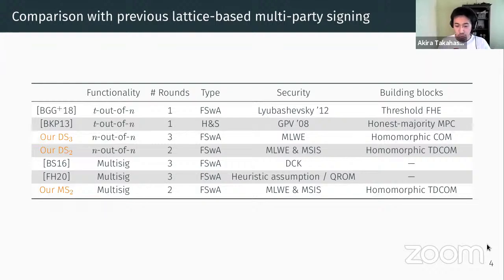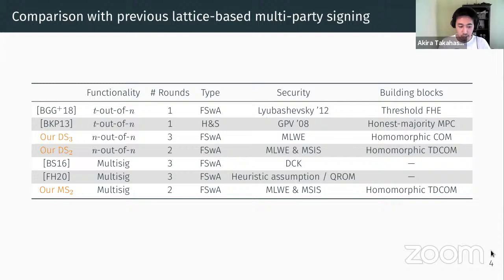Here is a comparison with previous multi-party signing protocols based on lattices. Before our work, there were a couple of t-out-of-n threshold signatures, which either require threshold FHE or honest majority multi-party computation. Our protocols only require homomorphic trapdoor commitment, while trading round complexity a bit. In our protocol, we require at least two rounds and we only achieve n-out-of-n functionality. For multi-signatures, to the best of our knowledge, previous constructions required at least three rounds of interaction, so we reduce the round complexity by one round.